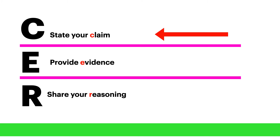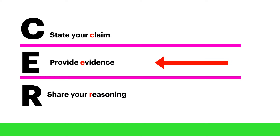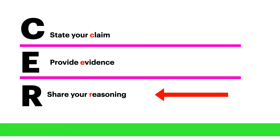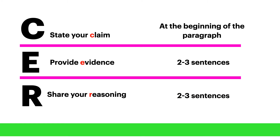Using the CER strategy will remind you to state your claim, provide evidence to support your claim, and share your reasoning. These three components work together in a paragraph. You will want to start your paragraph out with stating your claim, followed by two to three sentences of evidence to support the claim, and you will end the paragraph by sharing your reasoning.